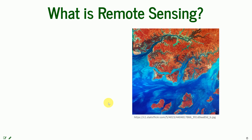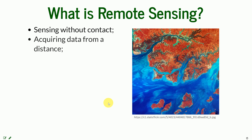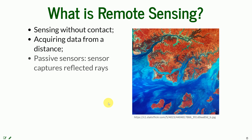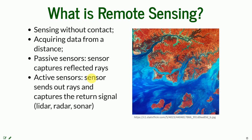Let's start from the very beginning. Remote sensing is a really broad discipline that includes everything associated with sensing without contact — all the data that are acquired from a distance. It can be visual data, it can be sound, and the sensor can be passive, meaning it just observes and does not send any signals to the ground. We can also have active sensors, which first send some information to the ground and receive the feedback — the return signal.